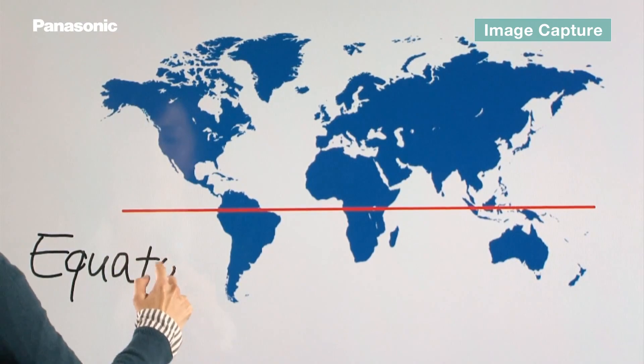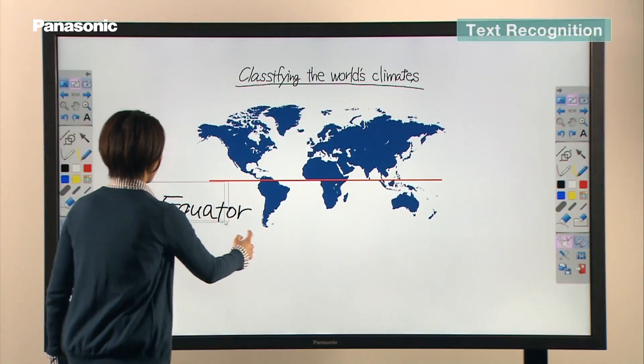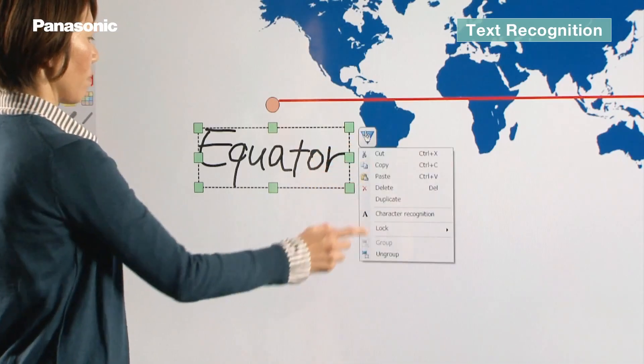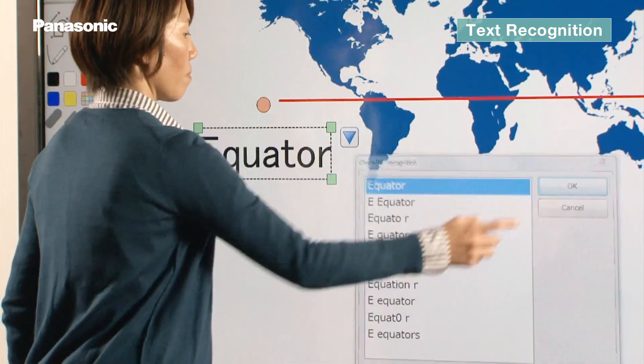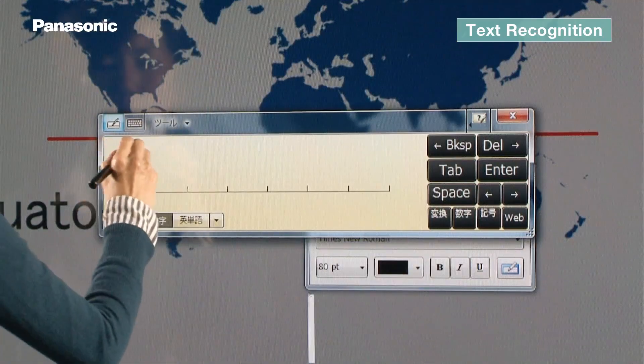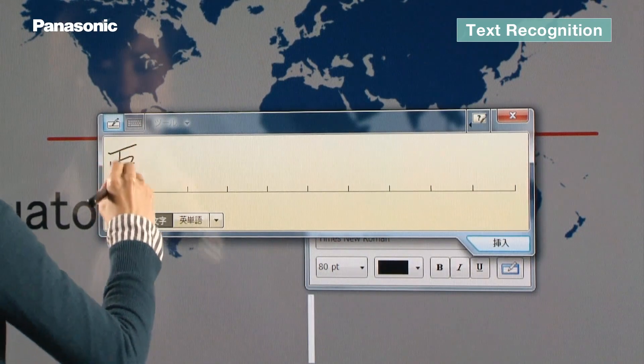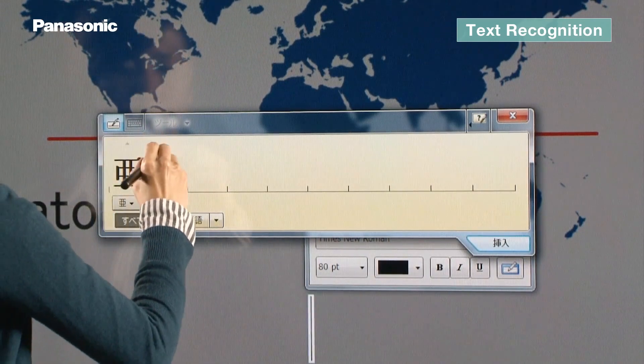The character recognition tool translates handwritten characters into legible typeface. It's also possible to use the text palette to input text.